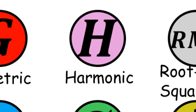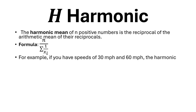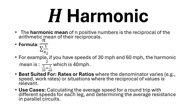Harmonic mean. The harmonic mean of n positive numbers is the reciprocal of the arithmetic mean of their reciprocals. The formula is as shown. For example, if you have speeds of 30 miles per hour and 60 miles per hour, the harmonic mean is calculated as shown, equal to 40 miles per hour. Best suited for rates or ratios where the denominator varies, e.g., speed or work rates, or situations where the reciprocal of values is relevant. Use cases: calculating the average speed for a round trip with different speeds for each leg, and determining the average resistance in parallel circuits.